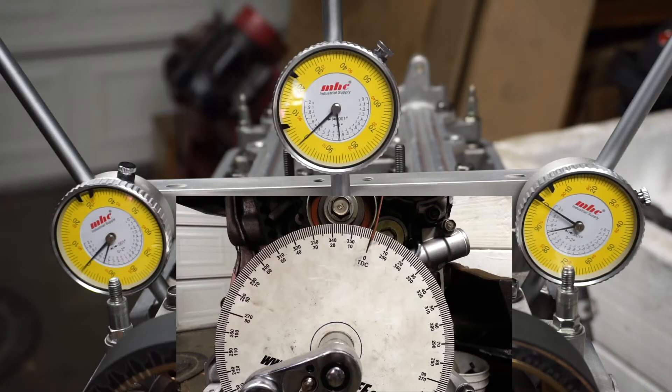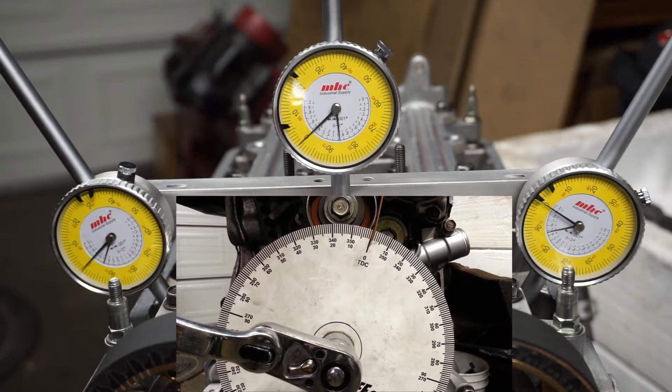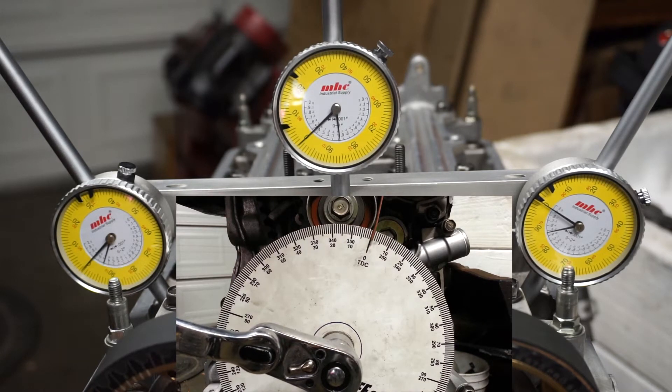I'll start rotating and we'll start with the exhaust side. I'll measure a couple thousandths before peak lift and a couple thousandths after peak lift, and we'll take the difference to find the center line.